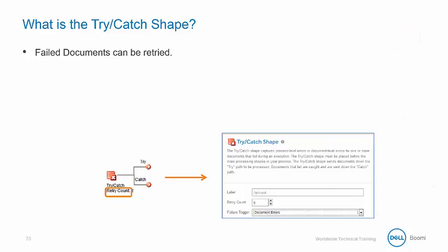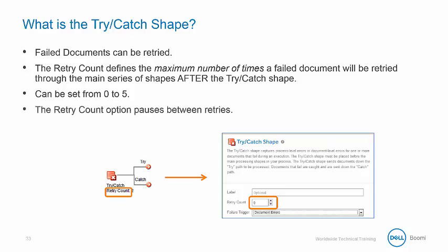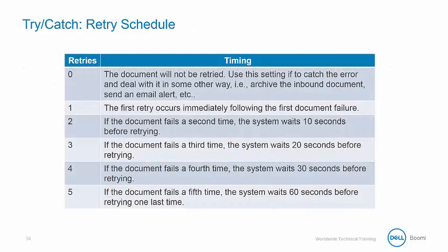The try-catch shape allows failed documents to be retried. The retry count defines the maximum number of times a failed document will be retried through the main series of shapes after the try-catch shape, and this can be set anywhere from 0 to 5. The retry count option does pause between retries. Here is a chart showing the retry schedule for the try-catch shape.